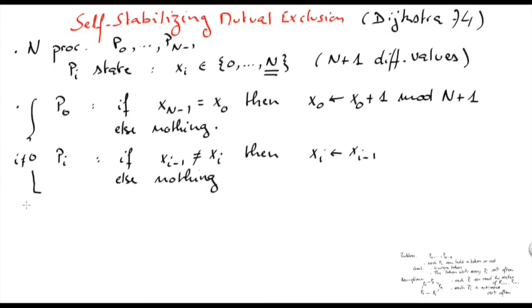Now we define what it means for a processor to hold the token. P0 holds a token when the condition in its rule is enabled, that is, when Xn-1 is equal to X0. Similarly, Pi with i different than 0 holds a token when the condition is enabled, that is, when Xi-1 is equal to Xi.